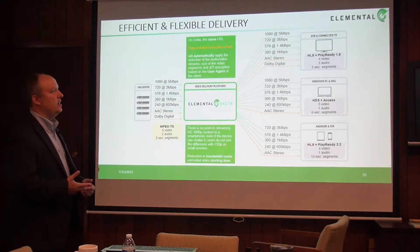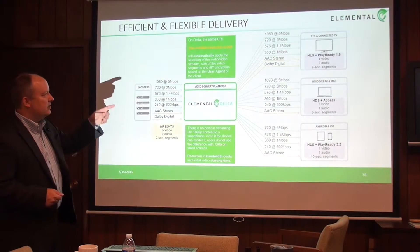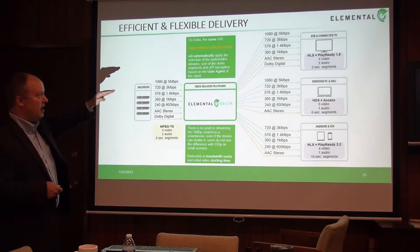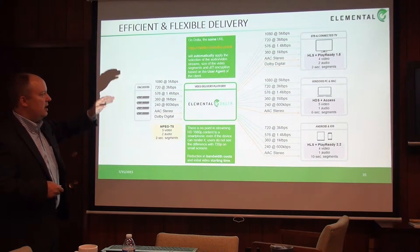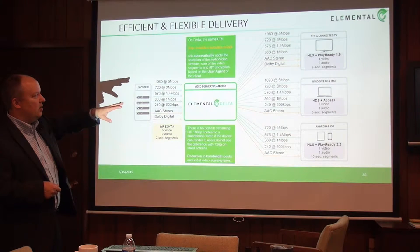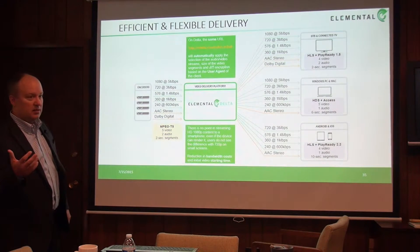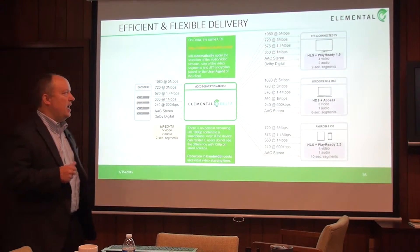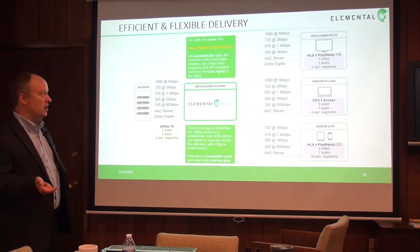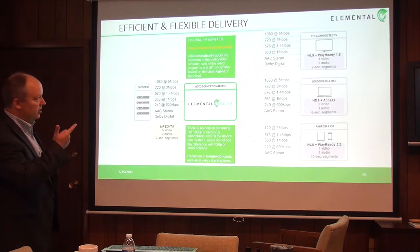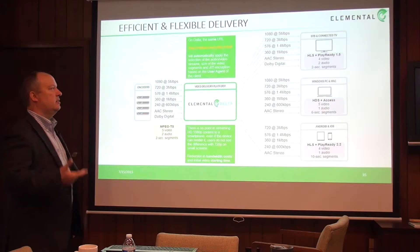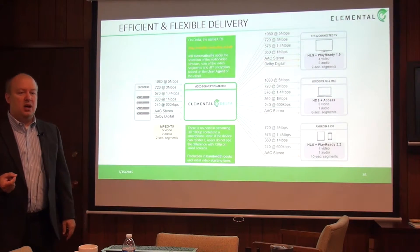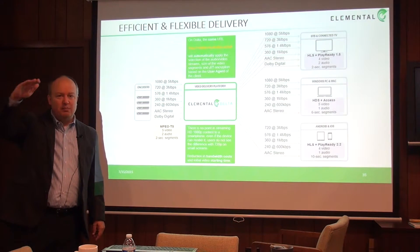If a set-top box or connected TV wants to watch something, the Delta says, 'That's a Samsung TV — I'm going to deliver it a 1080p stream at the maximum 5 meg that I have.' It will include AAC stereo along with Dolby Digital because a set-top box and connected TV can play Dolby Digital. It will deliver HLS plus PlayReady DRM, sending four video streams and two audio tracks. Because this is connected TV, it will chop it into two-second segments, constantly looking for the best bitrate.